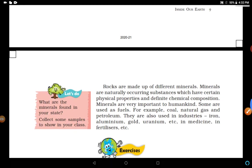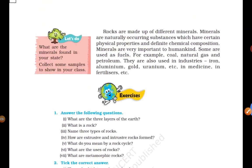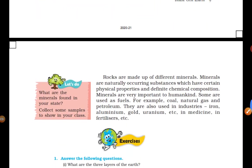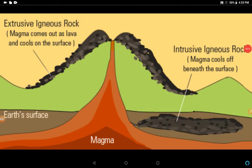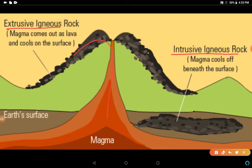These were the main diagrams. You should also make this diagram showing the types of igneous rocks - extrusive igneous rock and intrusive igneous rock. Magma converts into lava and comes out.